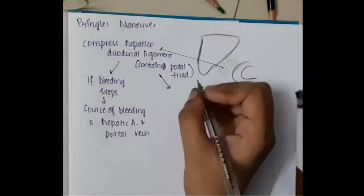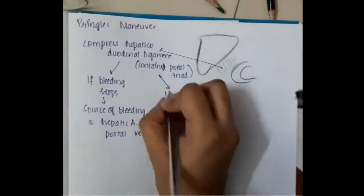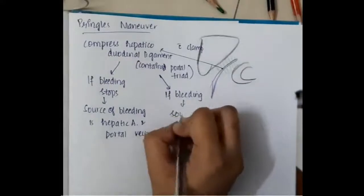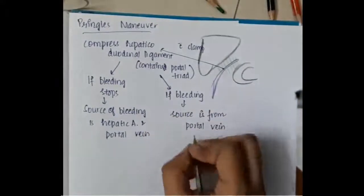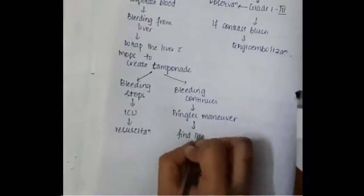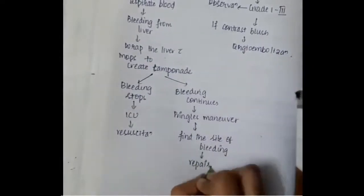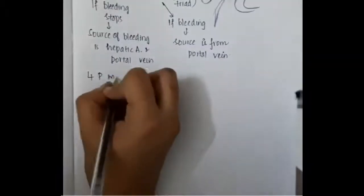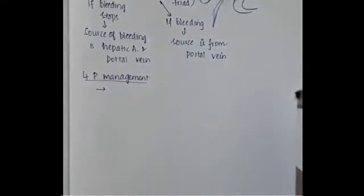If bleeding stops after Pringle's manoeuvre, the source is from the hepatic artery or portal vein, since the portal triad contains the hepatic artery and portal vein. If bleeding continues after Pringle's manoeuvre, the source is from the hepatic vein. Once the site of bleeding is found, you repair the defect accordingly.